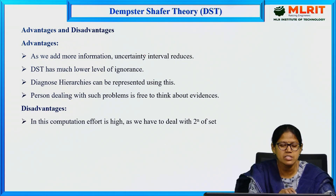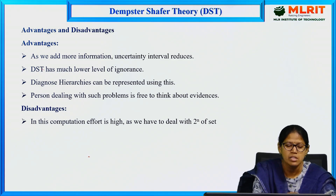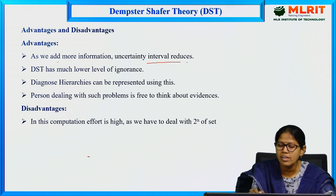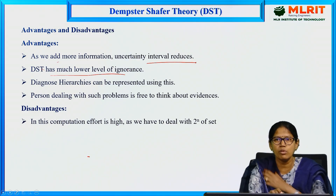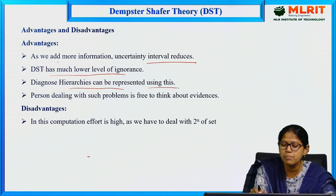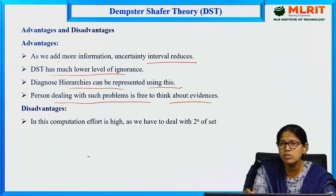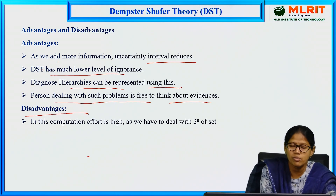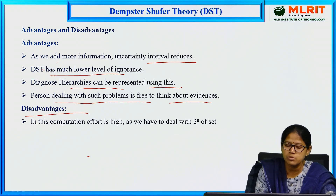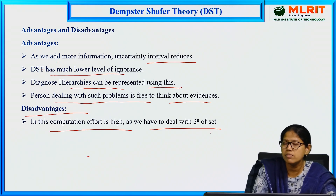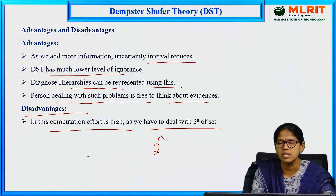Let us see the advantages and disadvantages of Dempster-Shafer theory. Advantages: as we add more information, the uncertainty interval reduces. Dempster-Shafer theory has a much lower level of ignorance, and a diagnostic hierarchy can be represented using this. The person dealing with such problems is free to think about evidences. The only disadvantage is that if evidences or possibilities are more, the computation effort is also high, as we have to deal with 2 to the power of n elements in the set.